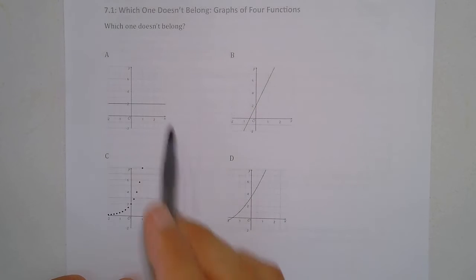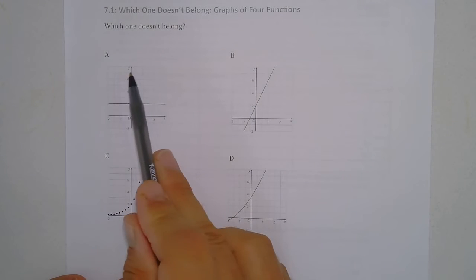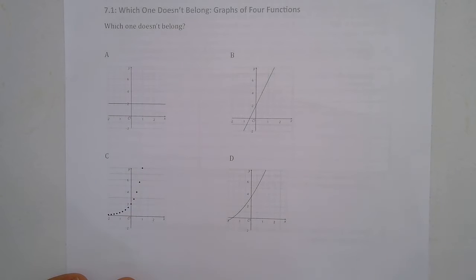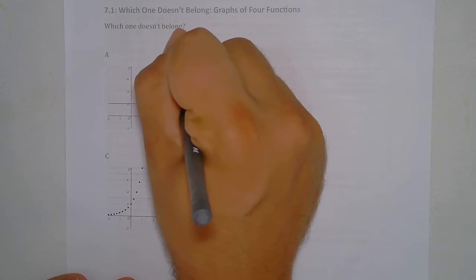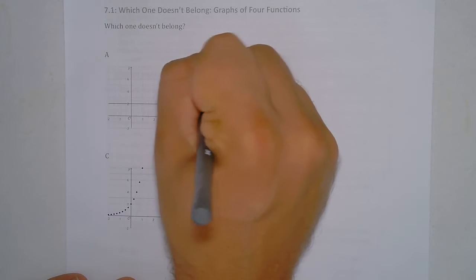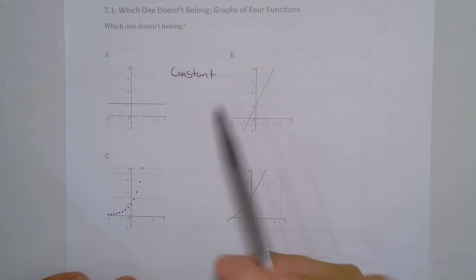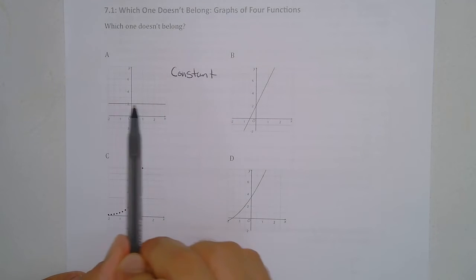So what stands out to me right away would be graph A doesn't belong. It is a constant function and there is no rate of change, so it just is horizontal.